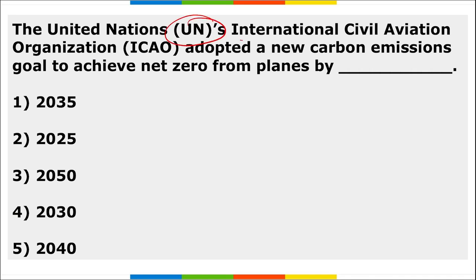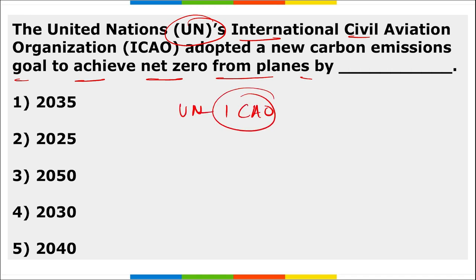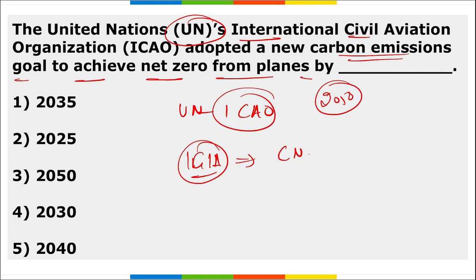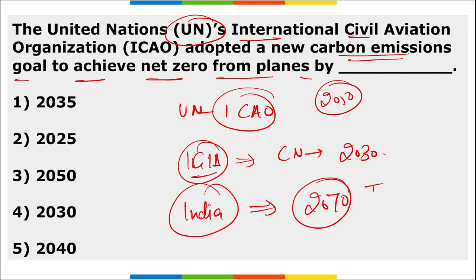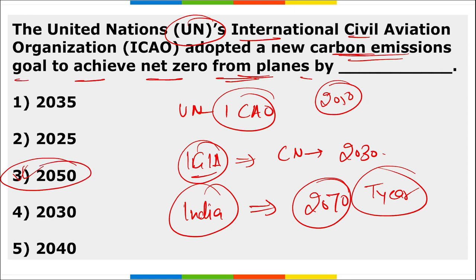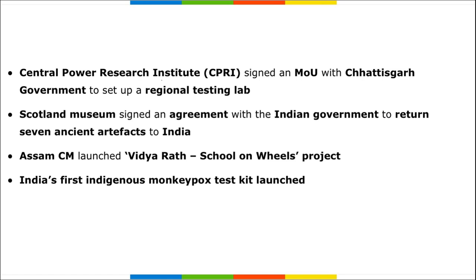The United Nations International Civil Aviation Organization (ICAO) has adopted a new carbon emission goal to achieve net zero from planes by the year 2050. Also remember that Indira Gandhi International Airport is planned to become carbon neutral by 2030, and India's overall target to become carbon neutral is by the year 2070.